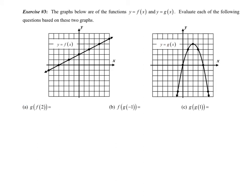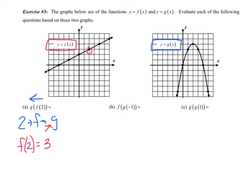Now we're going to do the same idea, but this time we have two graphs that are functions instead of equations. Note that one says F of X and the other says G of X. For G of F of 2, working backwards: 2 goes into F. On the F graph (red), going to x equals 2, the height is 3. So F of 2 equals 3. Now G of 3 on the G graph — going to x equals 3, the height is 3 as well. Final answer is 3.